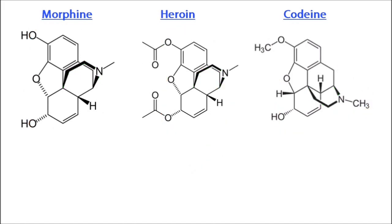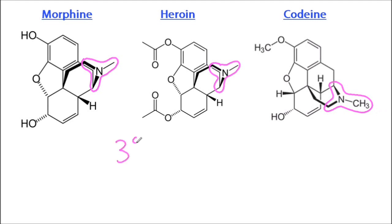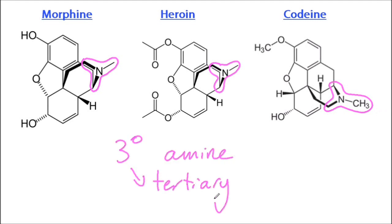Specifically, the IB asks in the syllabus that you know that they contain tertiary amines. So I've outlined the tertiary amine part. A tertiary amine is a nitrogen with three bonds to carbon atoms — in this case, three different carbon atoms.